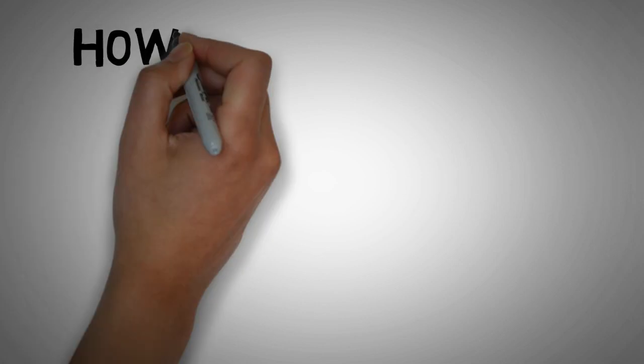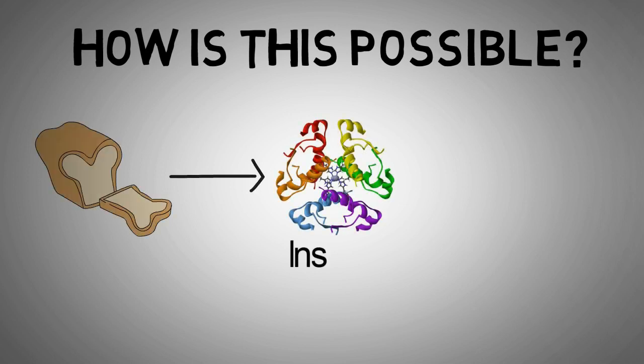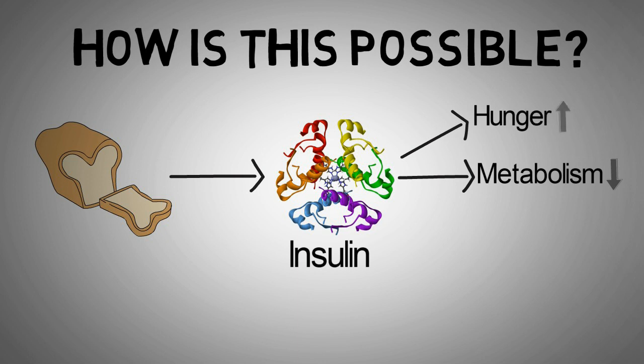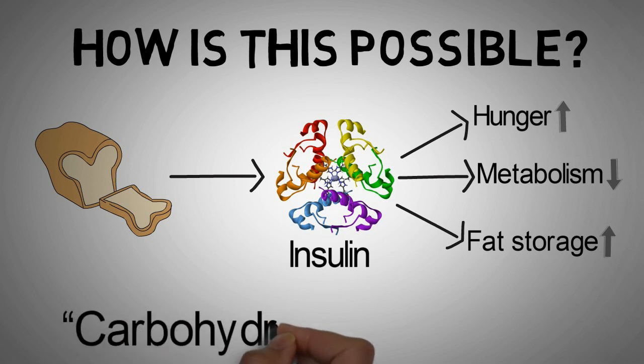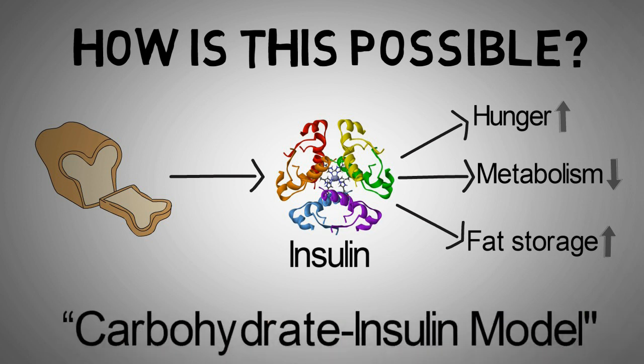Now you might be wondering, how is this possible? Well, great question. The most likely explanation is that processed high-glycemic carbohydrates lead to hormonal changes and thereby lower energy expenditure. So a slower metabolism. After all, it's our hormones that control how we feel and how much fat we burn or store. The idea behind it is called the carbohydrate-insulin model. You can write into the comment section if you want to learn more about it.